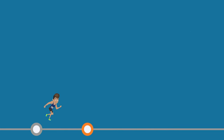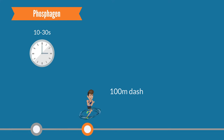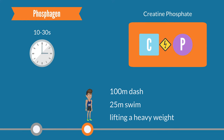Thereafter, if exercise continues for longer than a few seconds, the phosphagen system takes over to continually provide ATP. This system is the primary contributor of energy for exercise lasting between 10 to 30 seconds, such as a 100-meter dash, a 25-meter swim, or lifting a heavy weight. This system derives its energy from the breakdown of another high-energy molecule, intramuscular creatine phosphate.